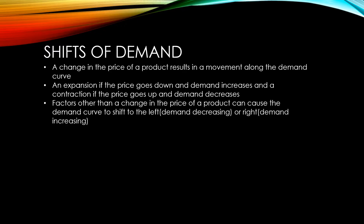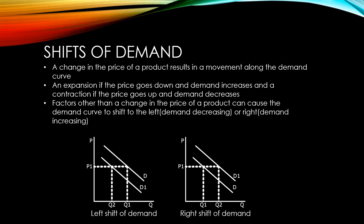The demand curve could shift to the left with demand decreasing, or it could shift to the right with demand increasing. If you look at the diagrams here, notice that it wouldn't matter where we put the price line. It would still show that for a left shift of demand there would always be less demanded at each particular price, and for a right shift of demand there would be more of the product demanded at each particular price.